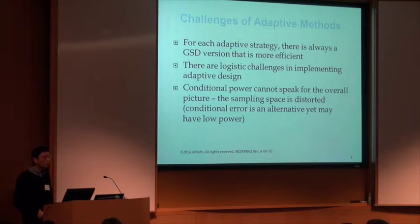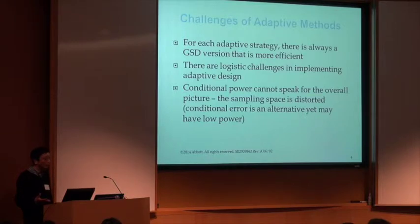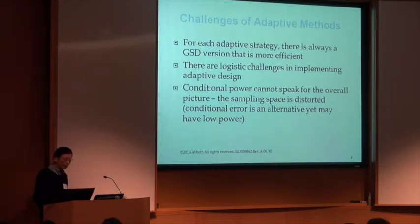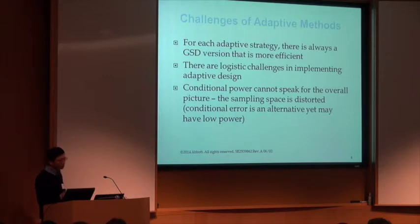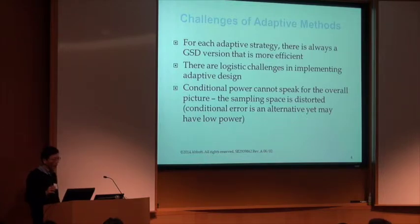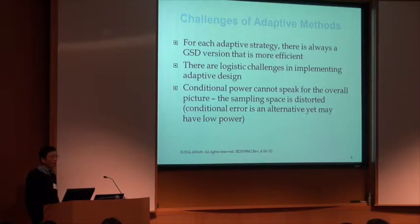There are some challenges associated with adaptive methods. For each adaptive strategy, there is always a group sequential design that is at least equivalent, sometimes more efficient. There are also logistic challenges in implementing adaptive design, which can be found in FDA guidance documents. Additionally, conditional power cannot speak for the overall picture because sample size is somewhat distorted. Some people advocate the conditional error approach, but there is also criticism that in certain situations it may have inferior power performance.